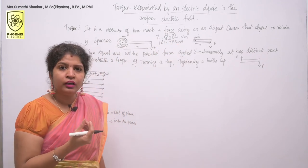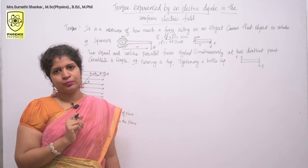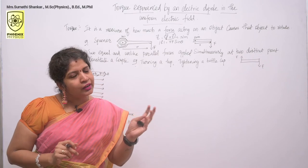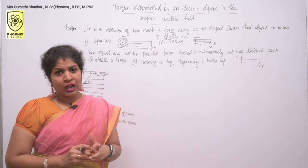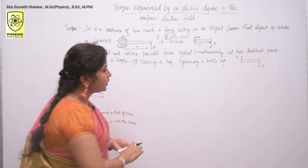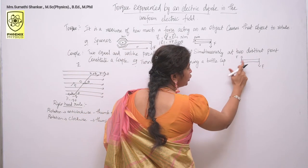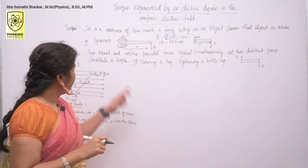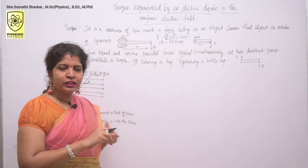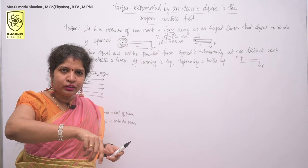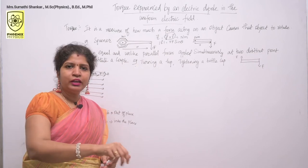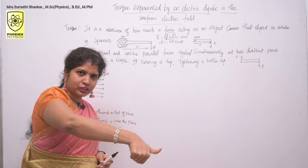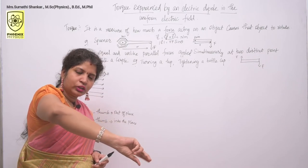What about couple? It is a special case of torque. Two equal and unlike parallel forces applied simultaneously at two distinct points constitute a couple. Examples of a couple are turning a tap and tightening a bottle cap. Here we have one force in this direction and another force in this direction, which constitutes a couple.